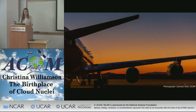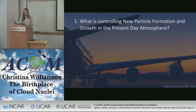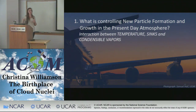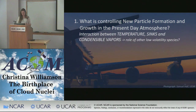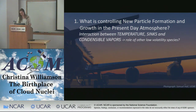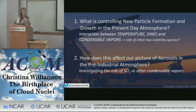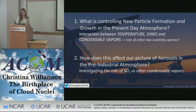To summarize: what is it that's controlling new particle formation and growth in the present-day atmosphere? It's a really complex interaction between low temperatures, low sinks of pre-existing large particles, and a mechanism to bring condensable vapors to these cold, clean regions of the atmosphere. From the model, we see some hint that there may well be other low volatility species — not just sulfuric acid — involved in nucleation and growth, potentially organics. The second question — how does this all affect our picture of aerosols in the pre-industrial atmosphere? — is really what we're going on to understand in work going forward, investigating the role of SO2 versus other condensable vapors.